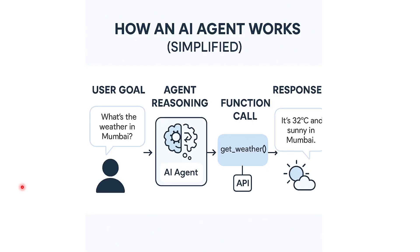Here's an example: you give the agent a goal, like asking 'what is the weather in Mumbai?' The agent will analyze the question, decide whether it needs to call a get_weather function that you define in your script, then execute that function and give you the result. It has a reasoning system that can take actions.